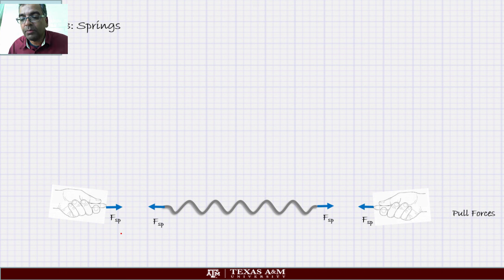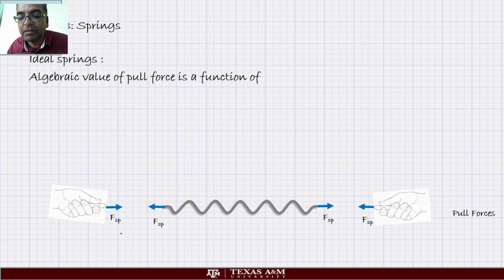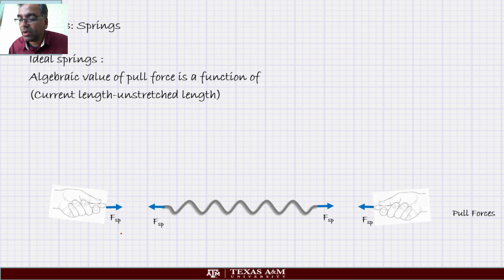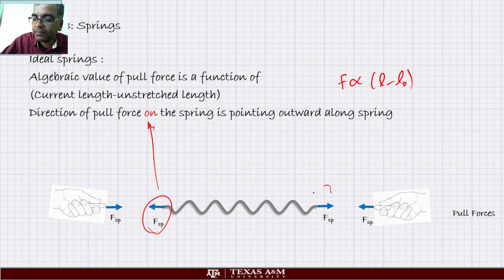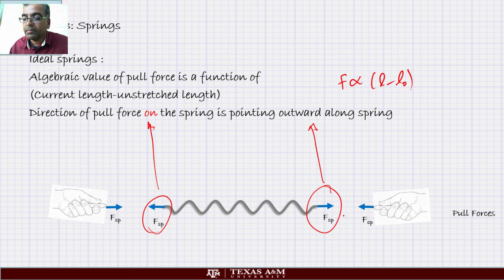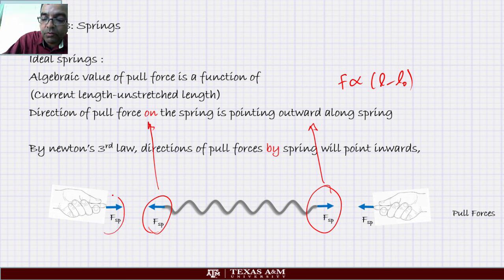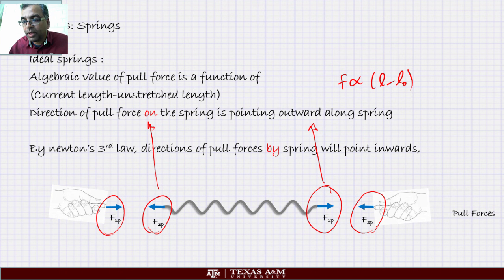For an ideal spring, the algebraic value of the pull force is a function of current length minus the unstretched or free length, so F is proportional to L minus L-naught. The direction of the pull force on the spring points outward — it doesn't matter if the number turns out to be negative; you still draw the arrow outward. By Newton's third law, the pull force on the hand will point into the spring. So one side pulls out, the other pulls in — everything is written as if it is pulling.